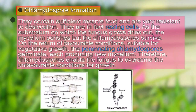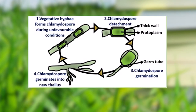These intercalary chlamydospores are resistant to desiccation and are the resting cells of Rhizopus. As the substratum dries out, the mycelium perishes but the chlamydospores survive due to their thick wall. On return of favorable conditions, the chlamydospores start germinating, produce new mycelium, and thus enable the fungus to survive unfavorable conditions such as water shortage.